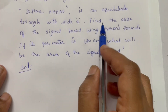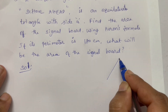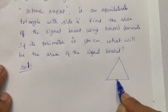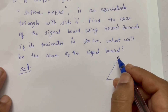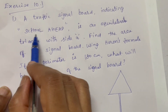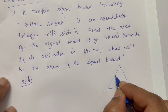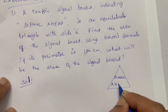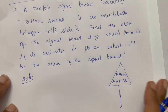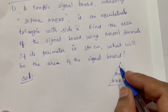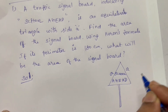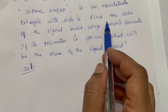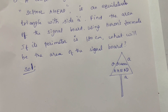The signal board is an equilateral triangle. There is an equilateral triangle with a standing signal board — 'School ahead' is an equilateral triangle. Each side has length A.